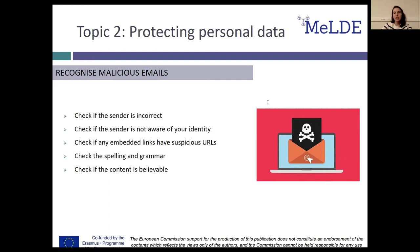Another sign to check is if the sender's signature matches how he would usually sign his emails. After, check if any embedded links have suspicious URLs. A way to do this is to hover over the links in an email before you open them and look if the destination's URL matches the site that the email refers to. A good way to identify a malicious email is to check its spelling and grammar. If the email is full of spelling and grammatical errors, like someone has used an online automatic translator for your language, it is probably a malicious email. Finally, check if the content is believable — if the email is promising great gain in return for a small investment or for free, it usually is a phishing email.